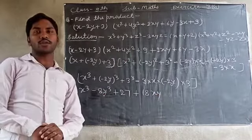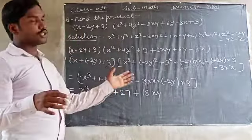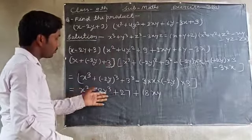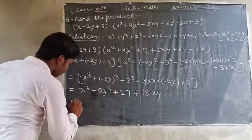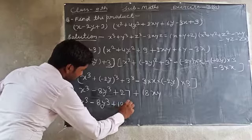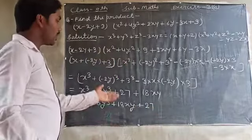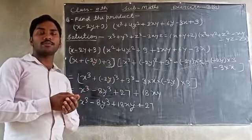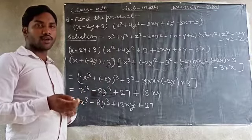This is the product. Without multiplying directly, we used the formula and found the product of the two expressions: x³ − 8y³ + 27 + 18xy, which we can also write as x³ − 8y³ + 18xy + 27. Both forms are correct. First convert the expression to match the formula, then you can get your answer very easily. That's all, thank you.